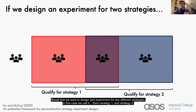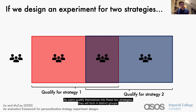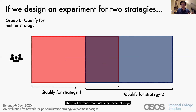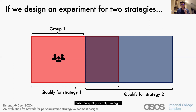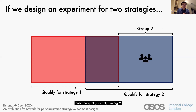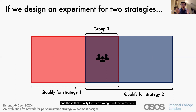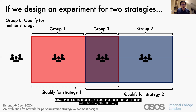Recall that we want to design an experiment for two different strategies — strategy one and strategy two. As users qualify themselves into these two strategies, they will form four distinct groups: those that qualify for neither strategy, those that qualify for only strategy one, those that qualify for only strategy two, and those that qualify for both strategies at the same time. It's reasonable to assume that these four groups of users will behave slightly differently, with different metric means or variances compared to people in another group.